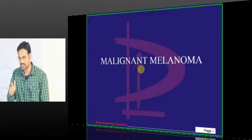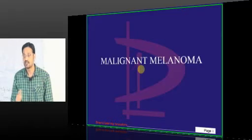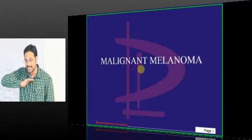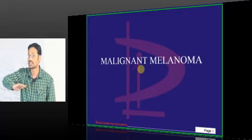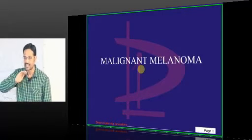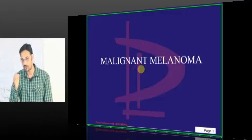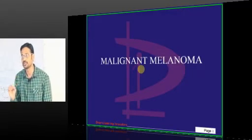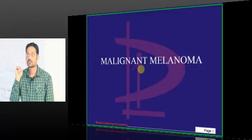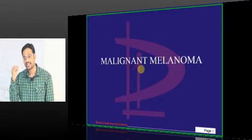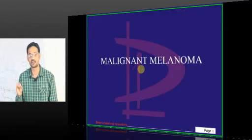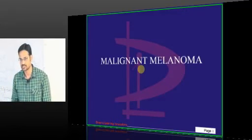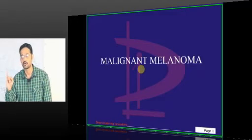The most common type is superficial spreading melanoma. It is the most common and is mostly in the horizontal phase — it acquires the vertical phase very late, which is an advantage. If we catch this melanoma in the horizontal phase, it is amenable to excision and the patient will have a good prognosis. It can occur at any site — extremities, trunk, or head and neck — but is usually seen in the extremities. This superficial spreading type has a good prognosis.